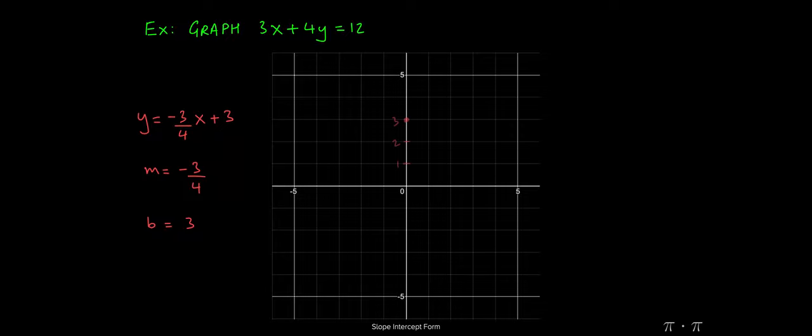So first we identify that since the y-intercept is 3, we can place the first dot at y equals 3. Next, we see that the slope is negative 3 over 4. That means we're going to be rising by negative 3, or going down by 3 units, and then running by 4, which is to say we're moving 4 units to the right. So the second dot shows up right there.